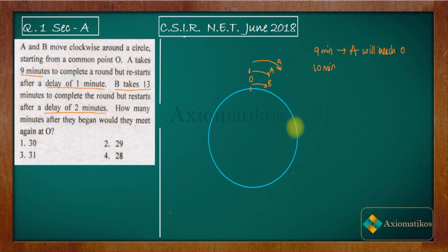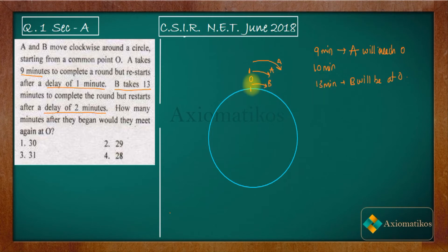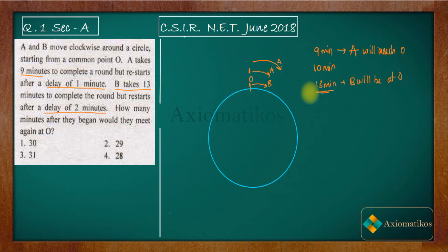After 13 minutes, B will be at O. B then has a 2-minute delay before restarting, so B will leave O again at 15 minutes. At 13 minutes, A is not at O — so we cannot consider that as our answer. A will reach O again at 10 plus 9, that is 19 minutes.